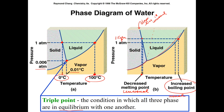Can water sublime — go directly from solid to vapor? Yes. If you get the pressure down below 0.006 atmospheres — say to 0.003 atmospheres — you can see from the diagram that H₂O solid will turn directly into H₂O gas at some temperature. You can read what that temperature is right off the graph.